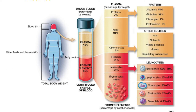The buffy coat is formed from platelets and white blood cells. Plasma contains mainly water — 91 percent — and the other part is proteins and other solutes. Proteins are albumin, globulin, and fibrinogen. Albumins make 57 percent of proteins, globulins 38 percent, fibrinogen four percent, and prothrombin one percent.